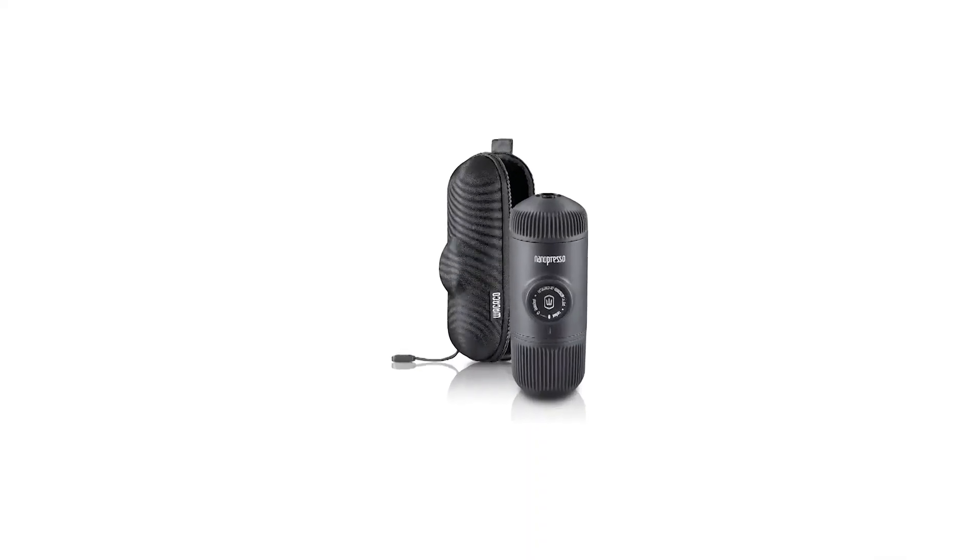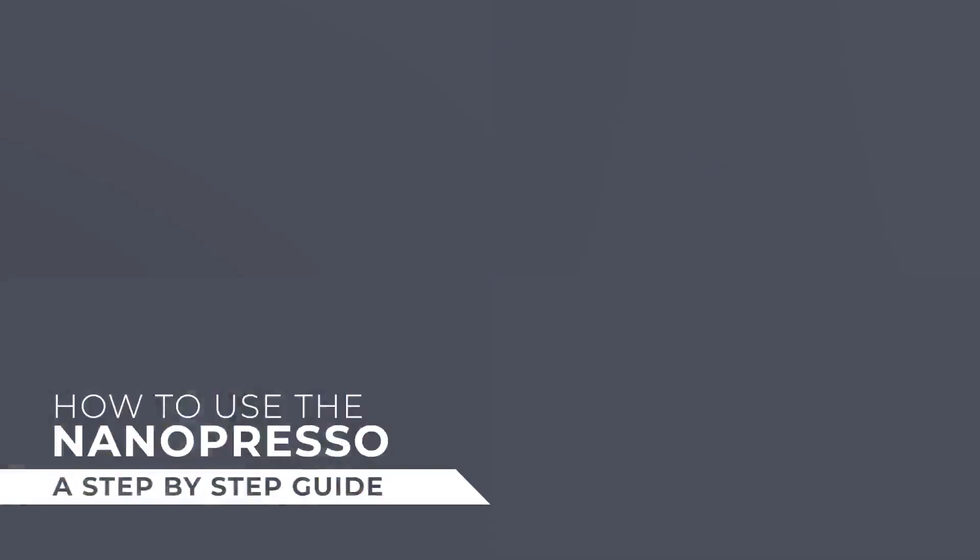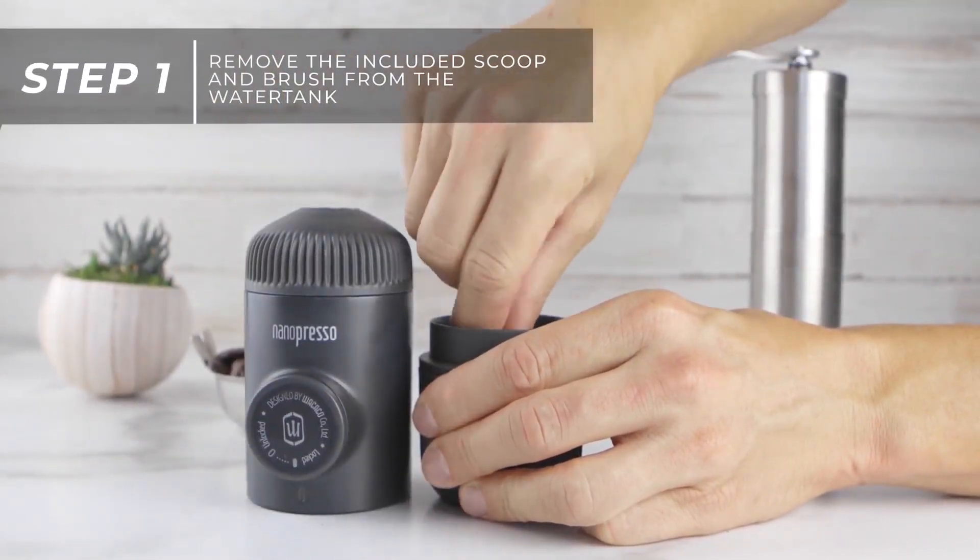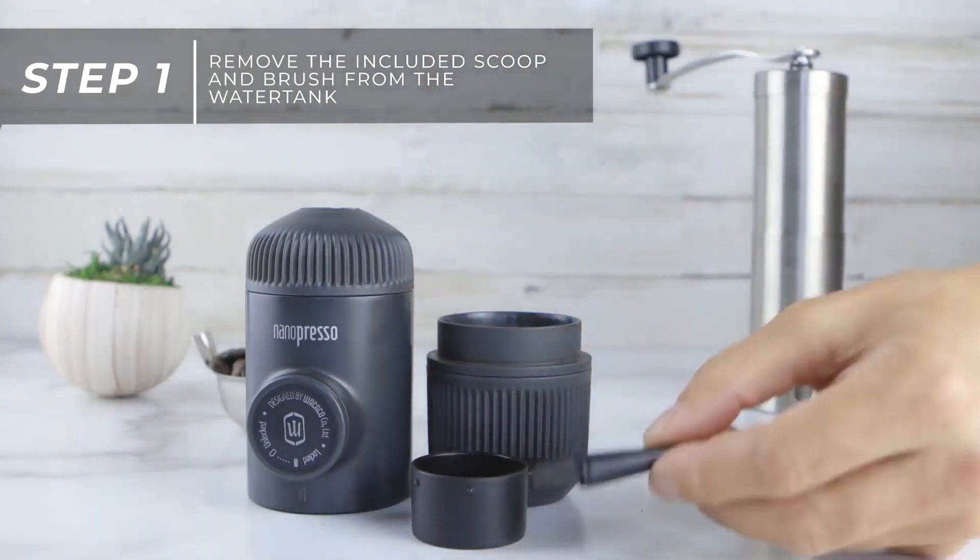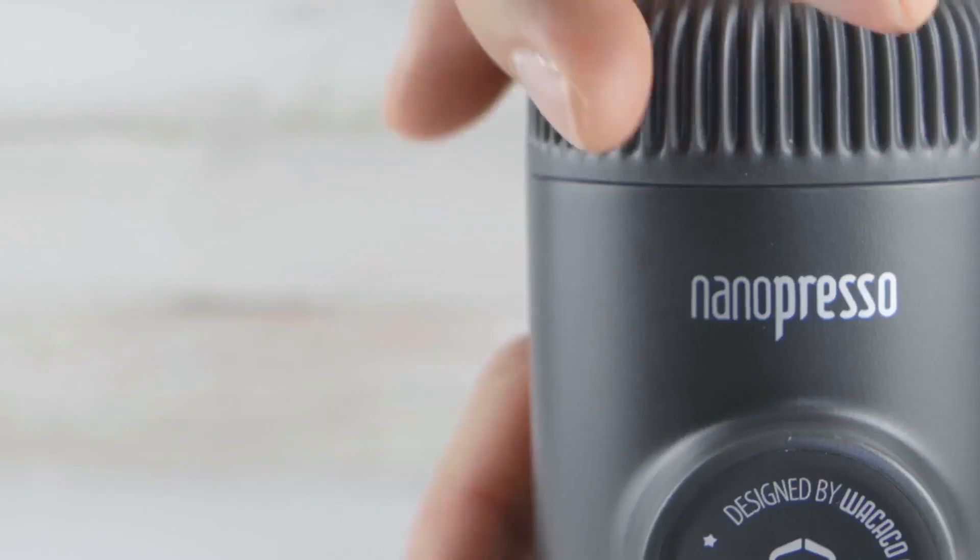Number 7 in my list is Wacaco Portable Nespresso machine. Although it's not a true Nespresso machine, the Wacaco Nanopresso is the best non-electric alternative to a proper espresso machine we've seen. And when you also purchase the pod adapter attachment, you can use original Nespresso capsules.